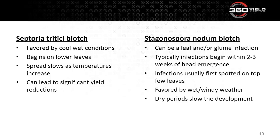Infections will traditionally begin within two or three weeks of head emergence, again favored by wet, windy weather. But if it dries off, that will slow the development of the disease as well. These two diseases are not uncommon in wheat fields.